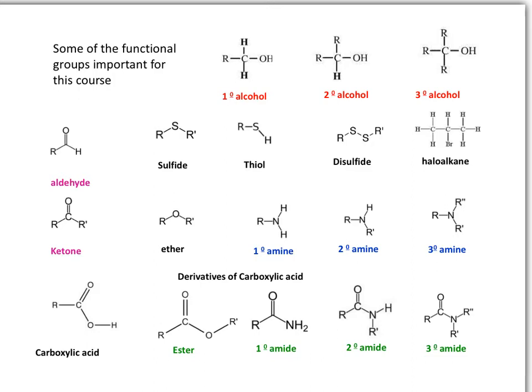Another element that can form bonds with carbon are the halogens. This example is a haloalkane that contains bromine, but this is not limited to bromine. We can also have haloalkanes containing chlorine, iodine, or fluorine. All these elements can be part of the family of haloalkanes.